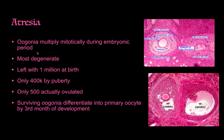Atresia is the natural degeneration of follicles due to improper division and other factors. You start with about 5 million oocytes at the fifth month of fetal development, but are left with only 1 million at birth. By puberty, that drops to about 400,000, and as an adult you only ovulate roughly 500 eggs — a small fraction of the original number.